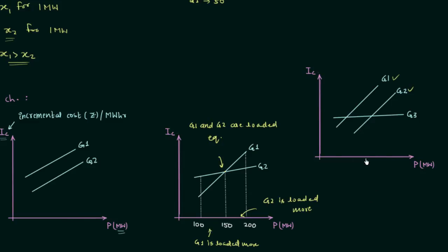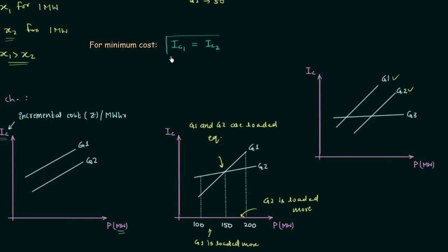For numerical problems, keep one key condition in mind: if there are two generators G1 and G2, where Ic1 is the incremental cost of G1 and Ic2 is the incremental cost of G2, then for minimum cost, Ic1 must equal Ic2. This condition will be used while solving numerical problems in the coming presentations. That is all for this lecture — if you have any doubts, please ask in the comment section.